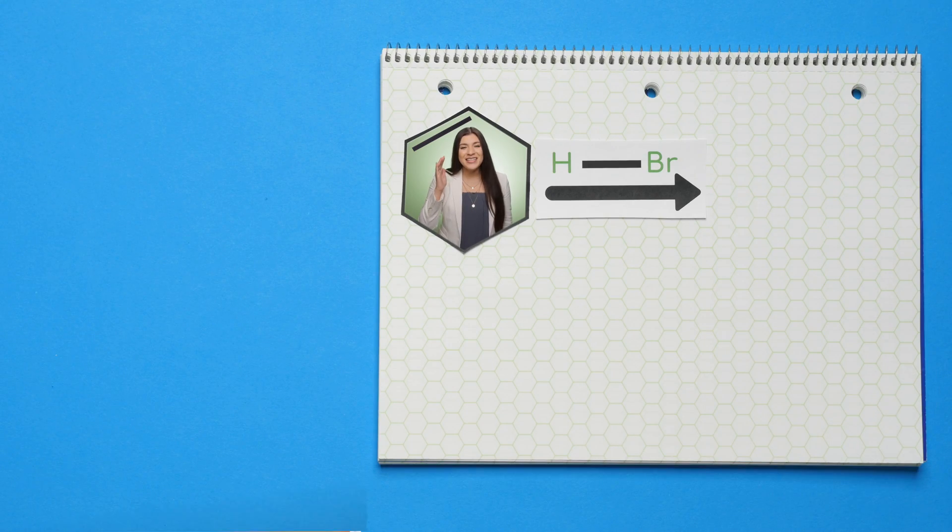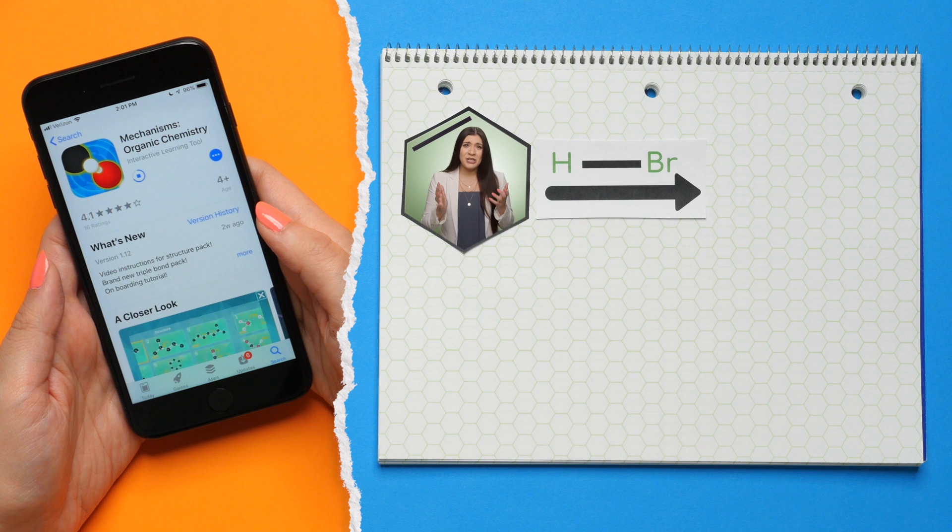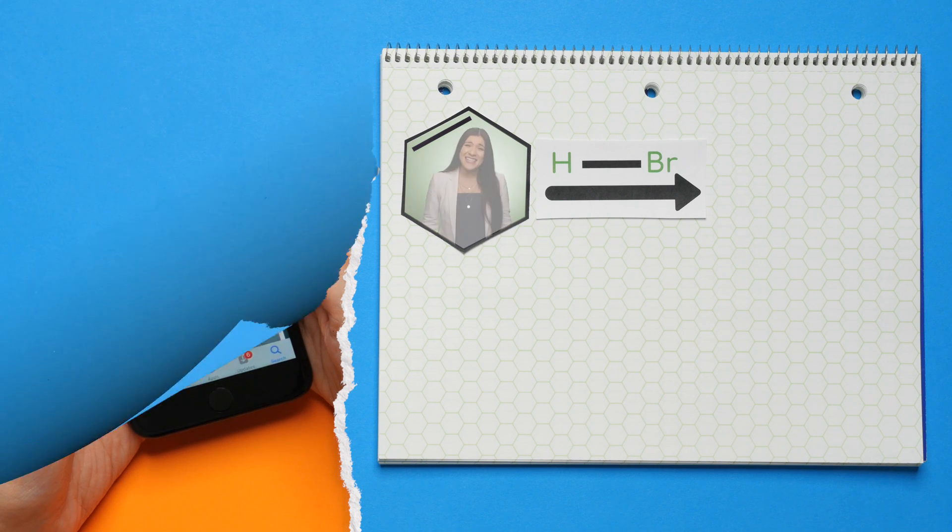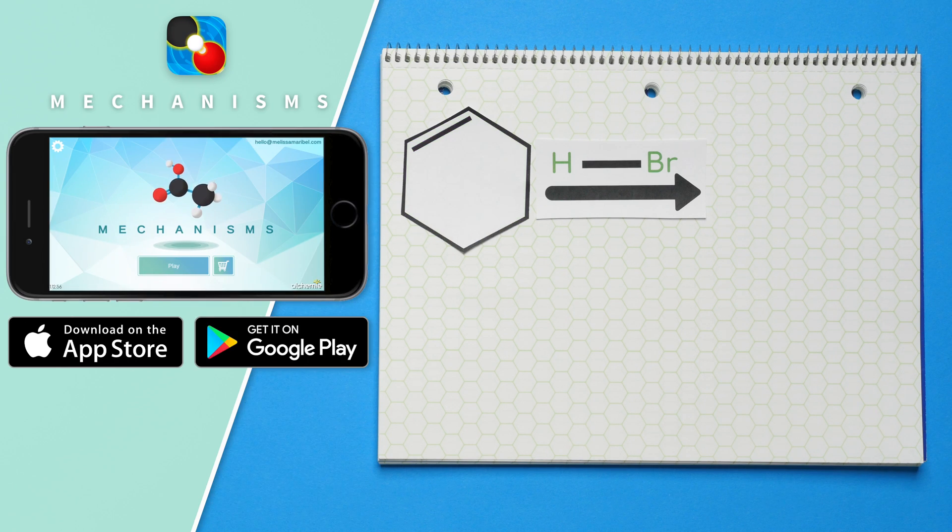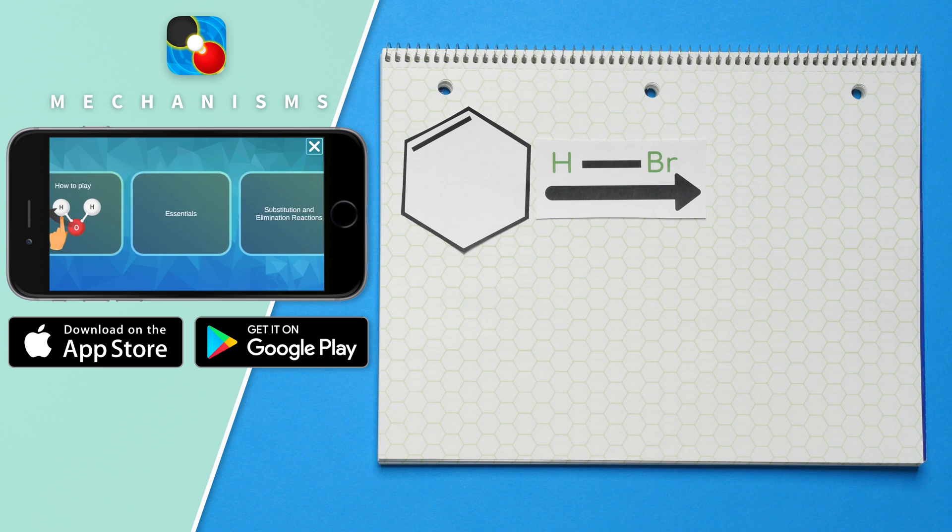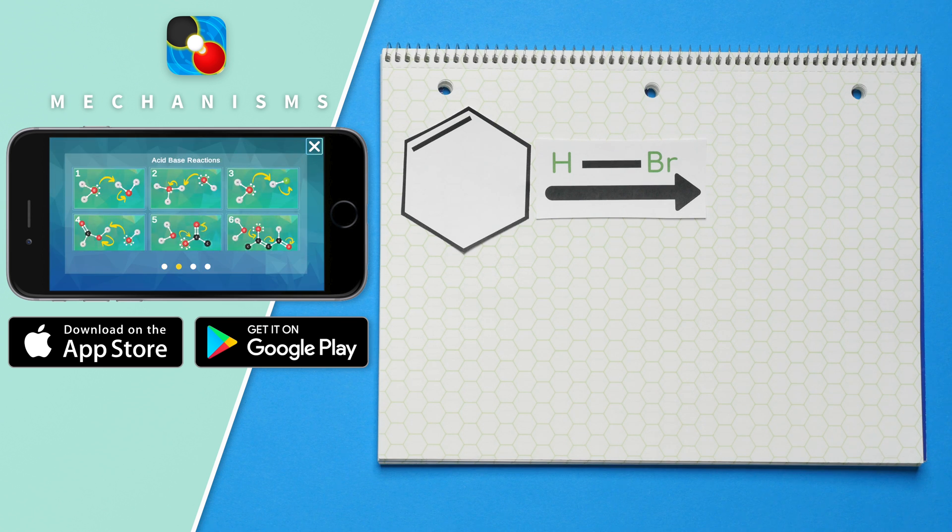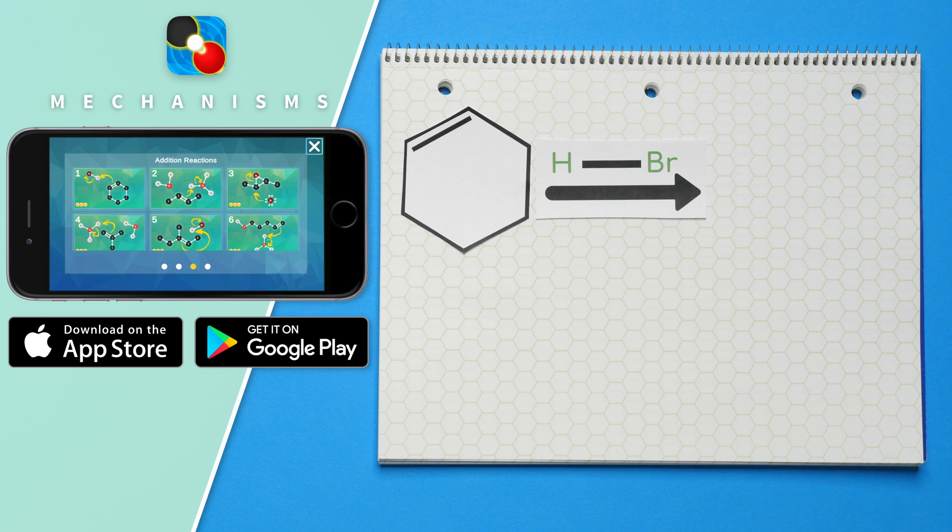That's why we'll be using the mechanisms app because it's literally designed to help you avoid these mistakes. If you would like to follow along with me, you can. The link to download this app is in the description. For this example that we're doing, it is in the essentials pack, which is free, and it's under the third section under addition. It's number one.